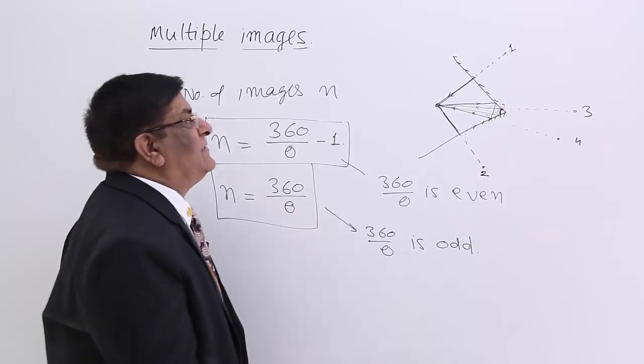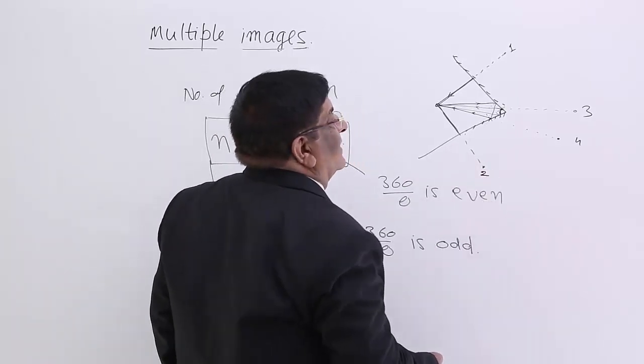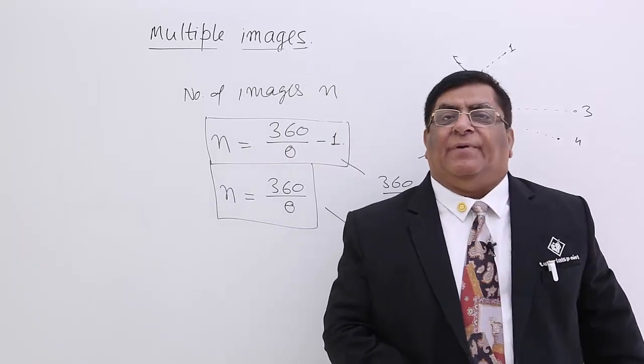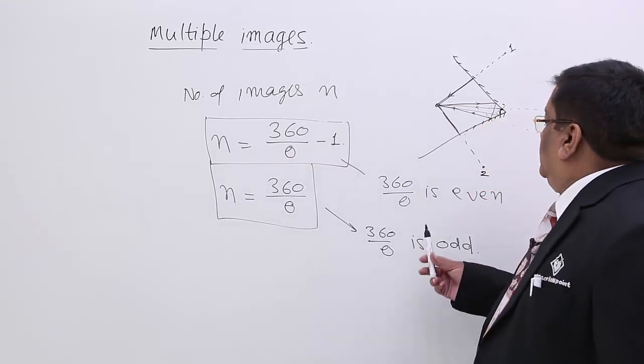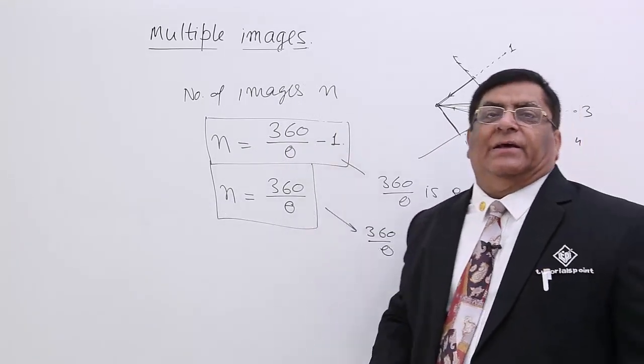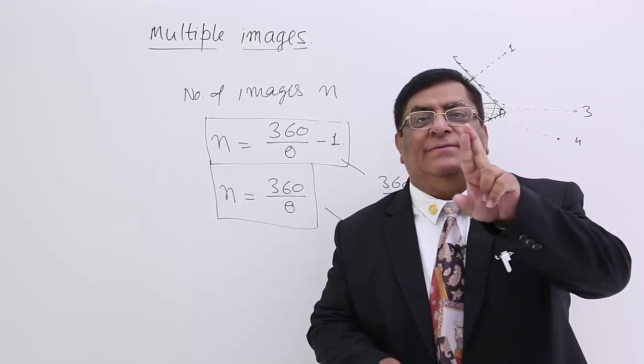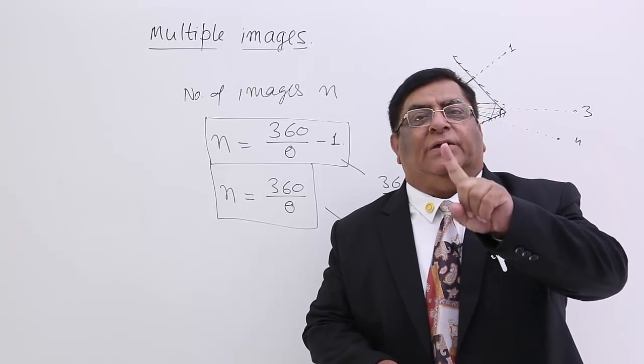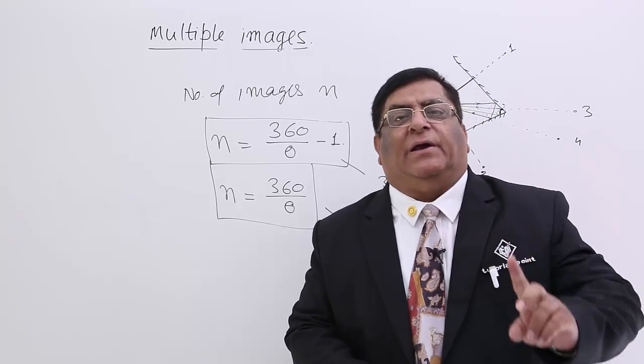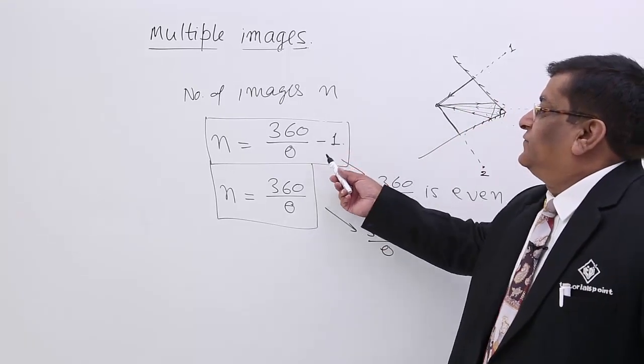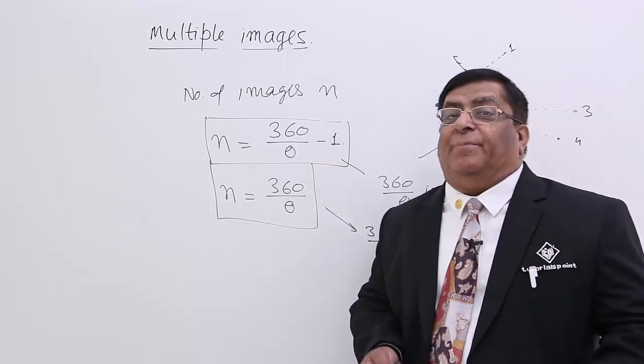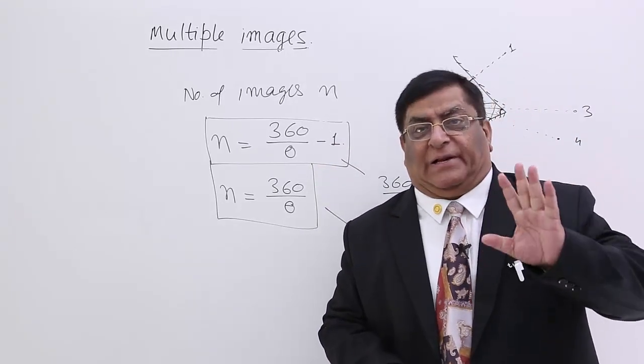Why does this happen? Because in multiple images, at the end if the images formed are even, then there will be two images which will overlap each other and that will appear to be one. So in our total count, one image becomes less. This one is less because of overlapping of two images at one place.